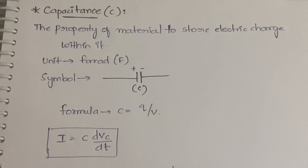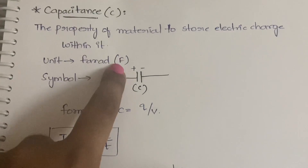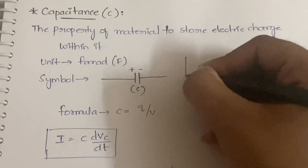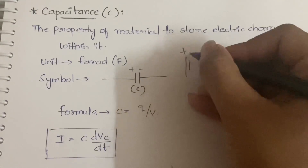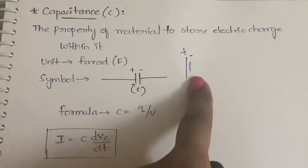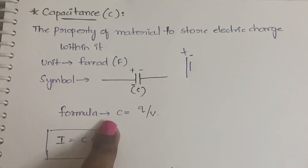Now let us move to capacitance. Capacitance is the property of a material to store electric charge within it. The unit is farad, denoted by F. The symbol looks like two equal-length parallel lines — don't confuse it with a battery symbol, which has one longer and one shorter line.